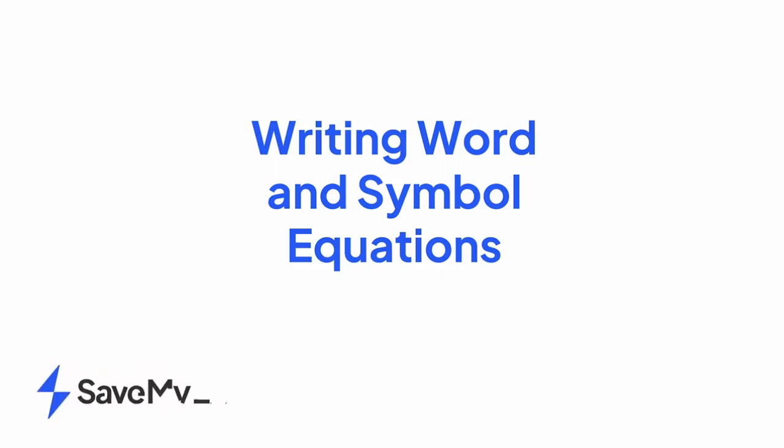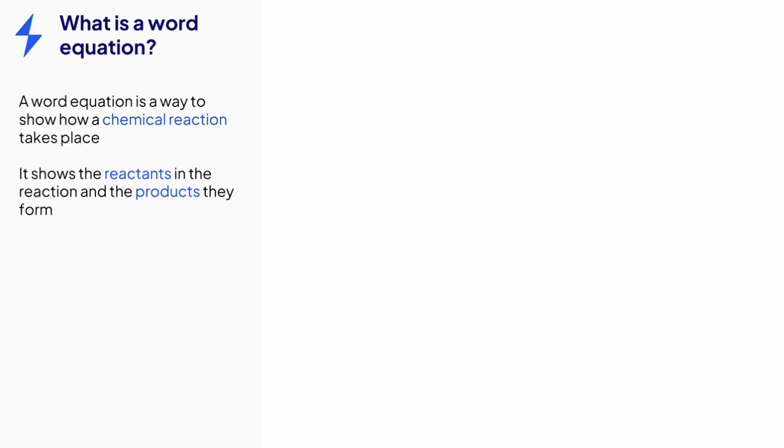In this video, we'll be looking at how to write word and symbol equations. A word equation shows how chemicals react together in a reaction, changing from reactants to products.